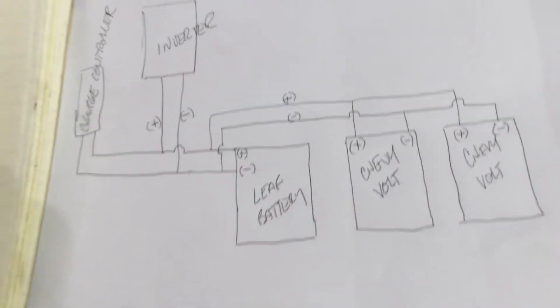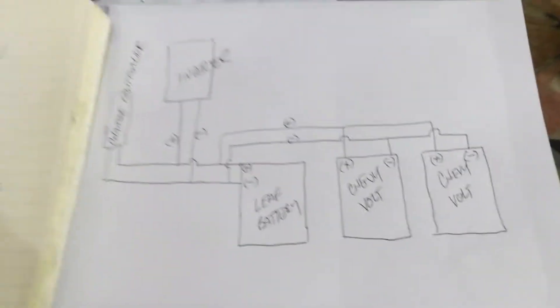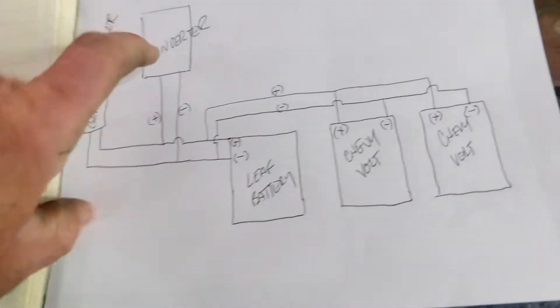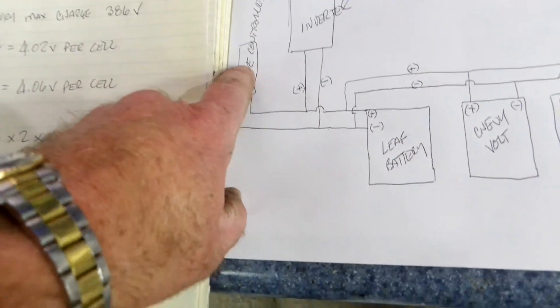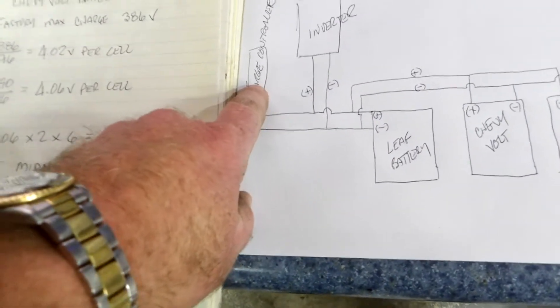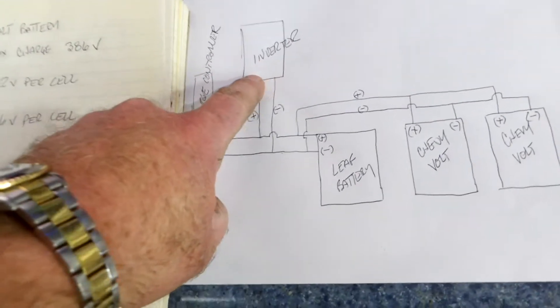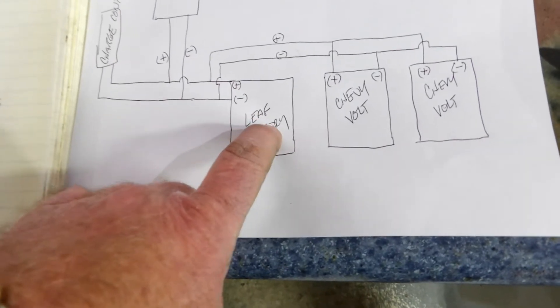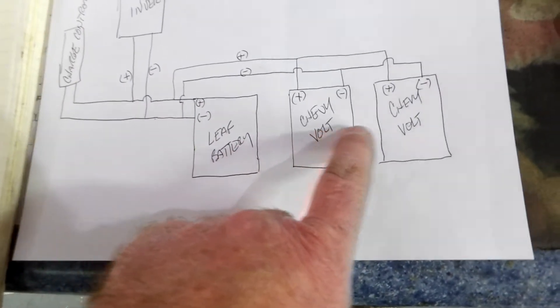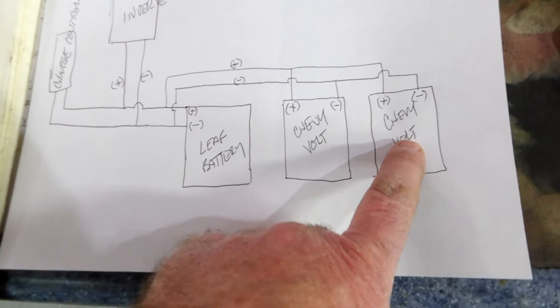What we've got is the inverter, the charge controller - the Midnight Classic charge controller, the Magnum inverters, the Nissan Leaf battery pack, and two Chevy Volt battery packs.